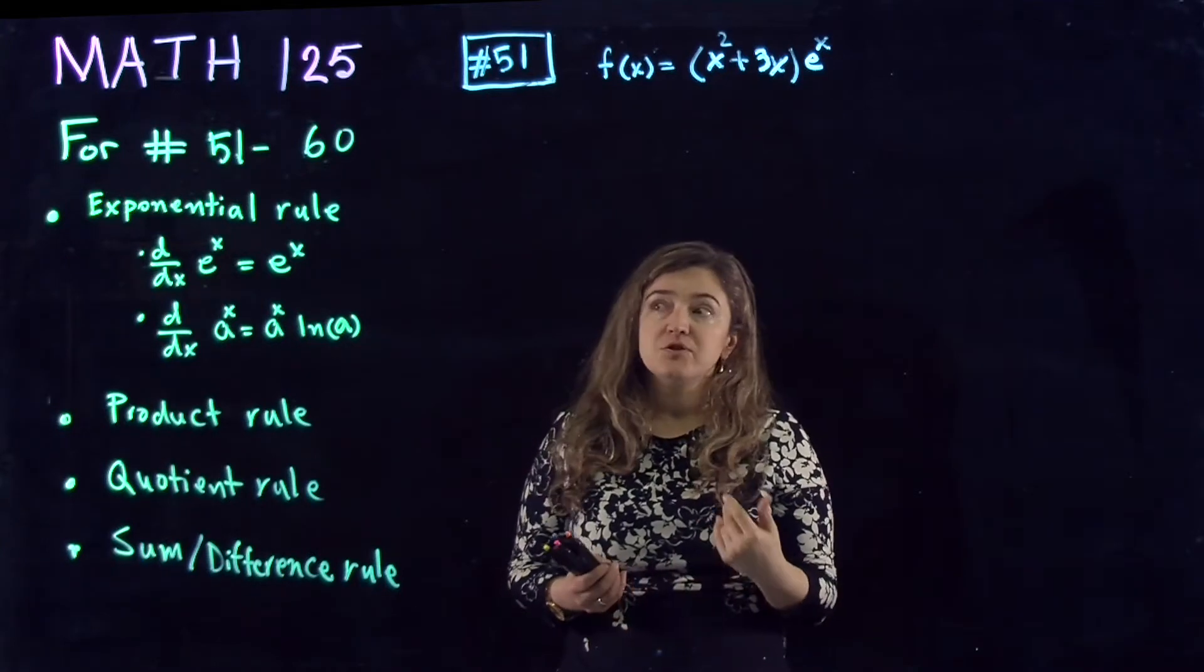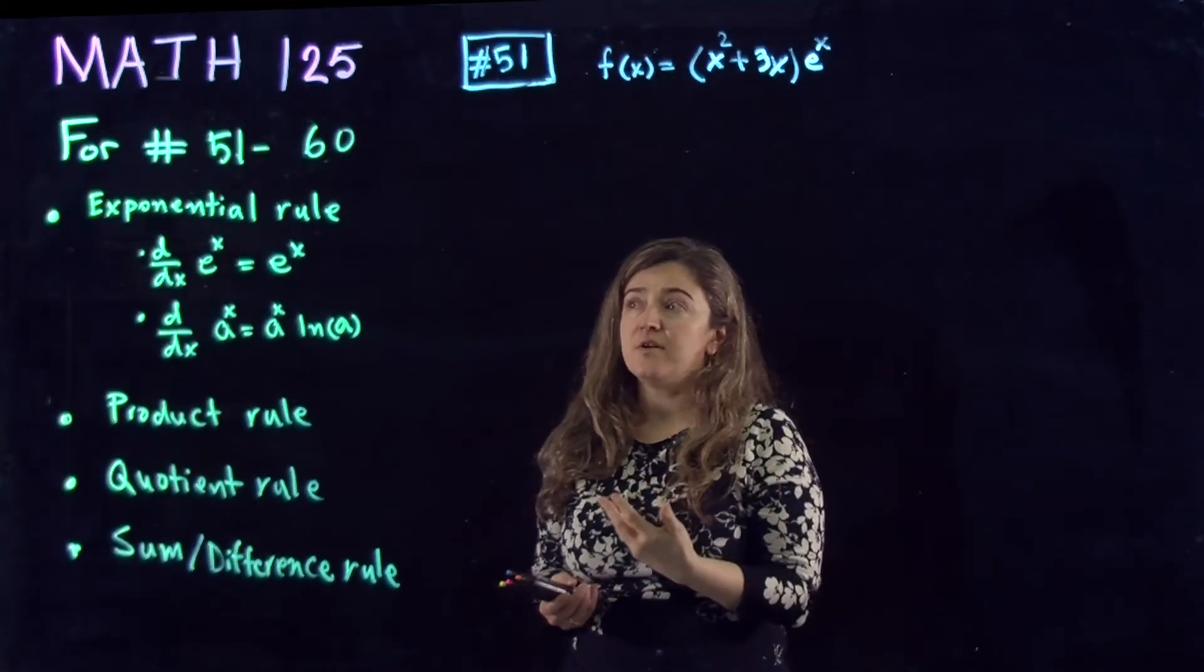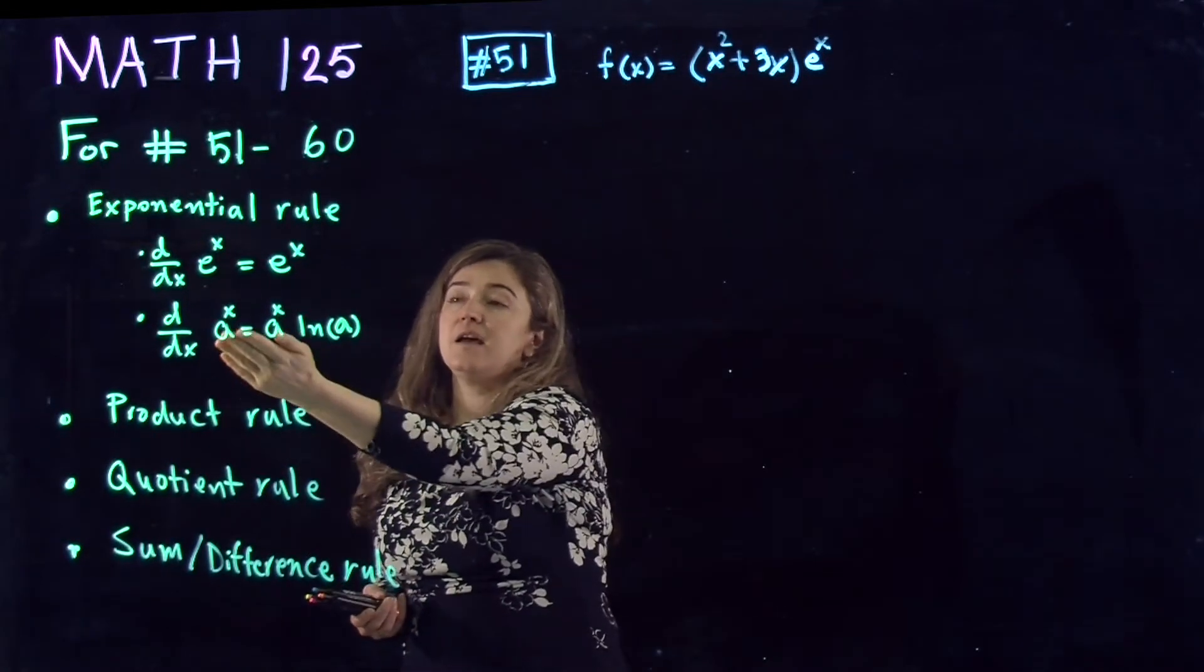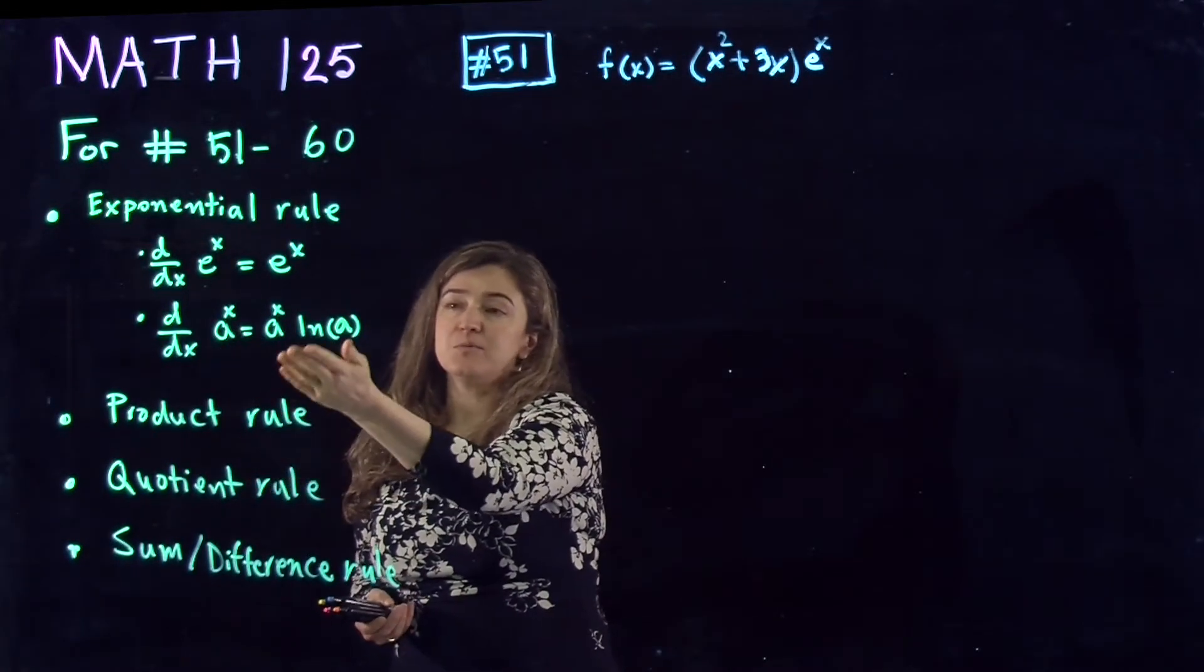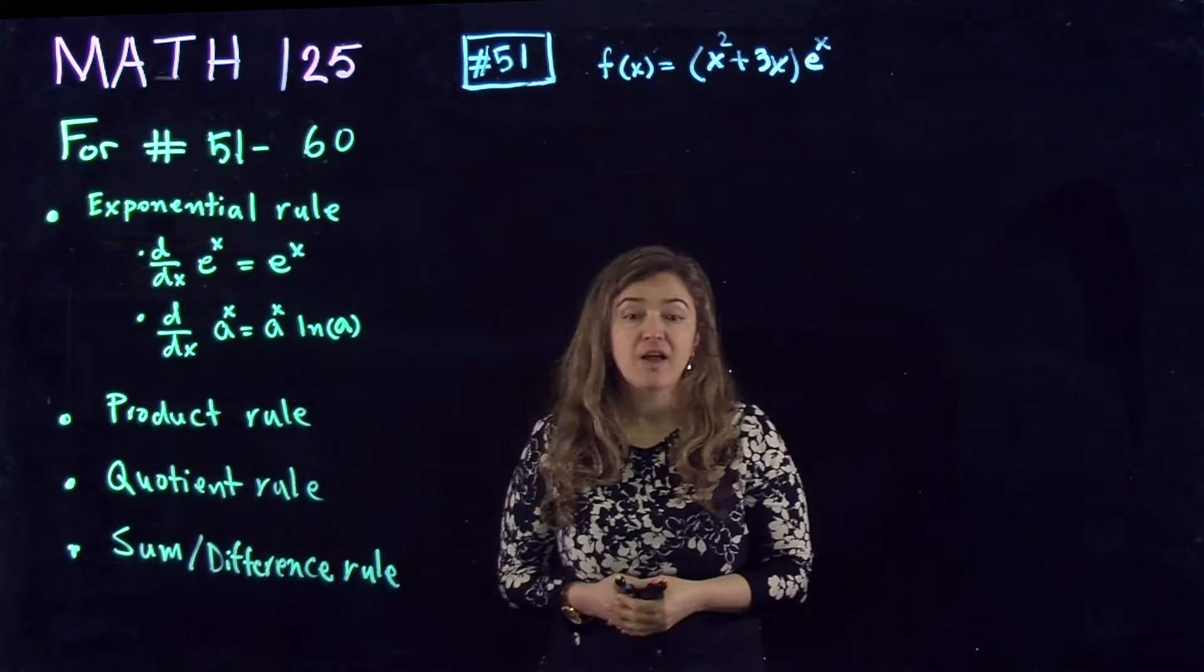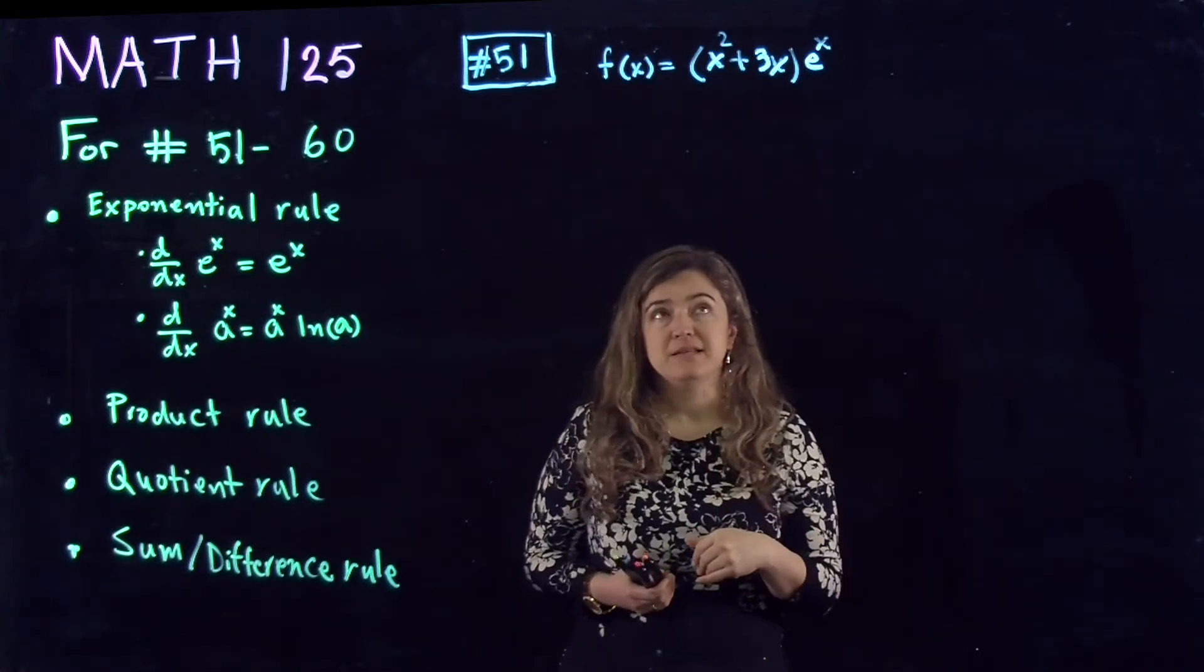This is out of the series 51 to 60, which involves exponential rules, derivative of e to the x which is e to the x, and derivative of a to the power x which is a to the power x times ln of a, the ln of the base.